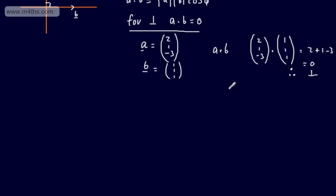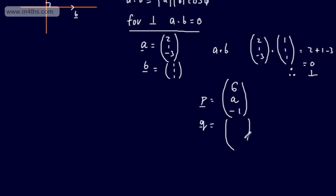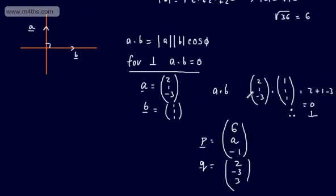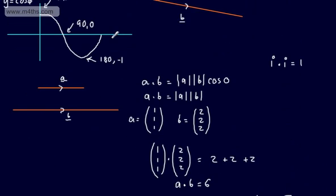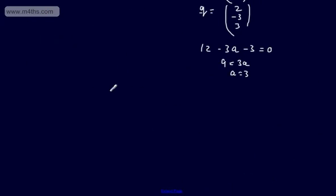A typical question might be: given that two vectors are perpendicular, find the value of A. For example, let P = (6, A, −1) and Q = (2, −3, −3), told that they are perpendicular. So we set P dot Q = 0: 6 times 2 is 12, A times −3 is −3A, and −1 times −3 is 3, giving 12 − 3A + 3 = 0. Wait, that gives 9 = 3A, so A = 3. That confirms the perpendicular vectors approach.